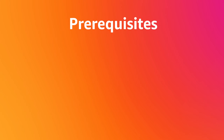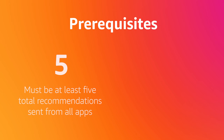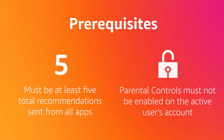Now before we get into exactly how content recommendations work, there are a couple of prerequisites we'll need to know in order for a recommendation row to appear. Firstly, there must be at least five recommendations sent out across all of the user's apps, including yours. And secondly, the user must not have parental controls set on their account. If either of these conditions are not met, then the recommendations row will not appear.